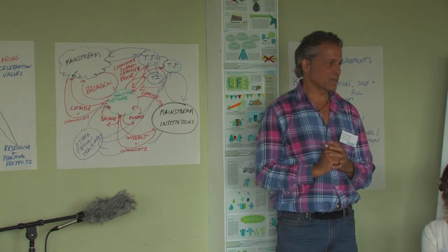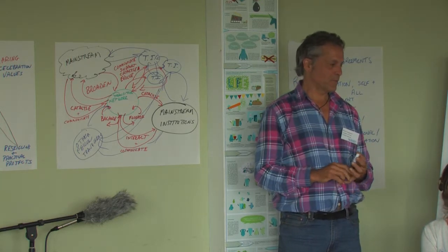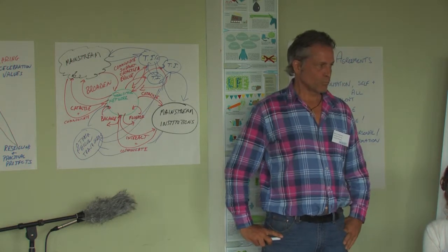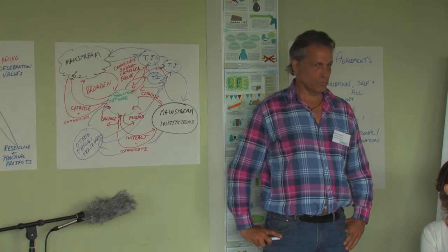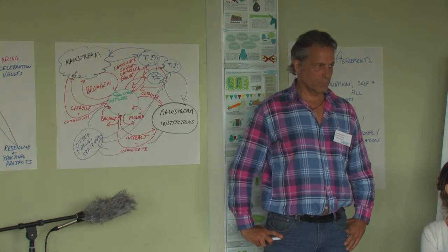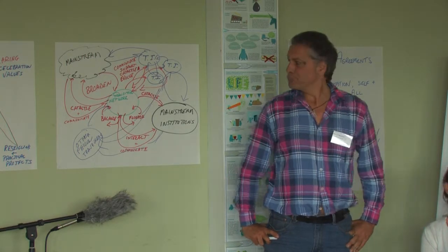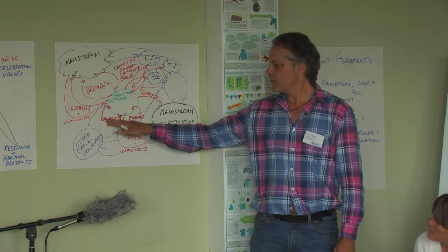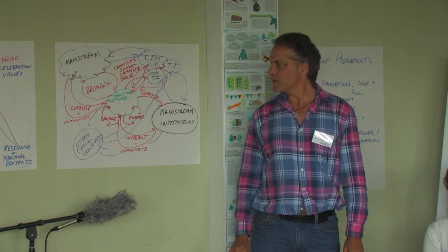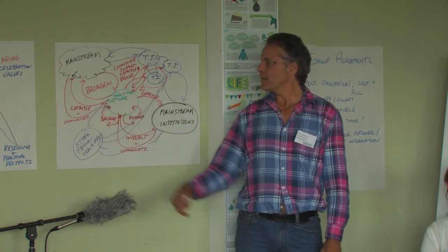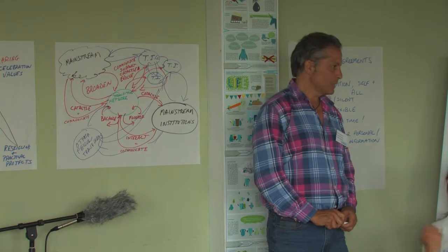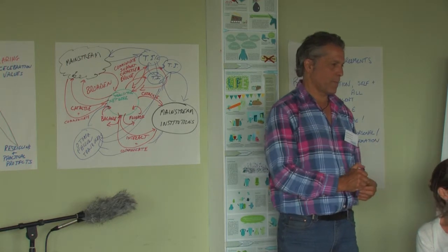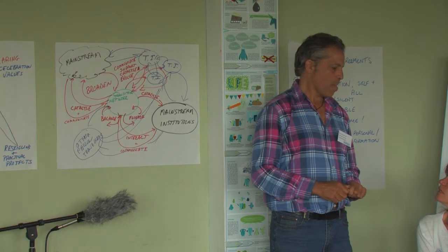It always seems to me that with transitions, the inner and the outer stuff often feel a bit different — they could perhaps be more integrated. I just wonder how that maps onto the model. Certainly the balance and flourish functions are probably much more inner. In terms of catalyzing, communicating, and broadening, we're attempting to do it both in and out — probably not doing a very good job of it. Balance was specifically within the organization.